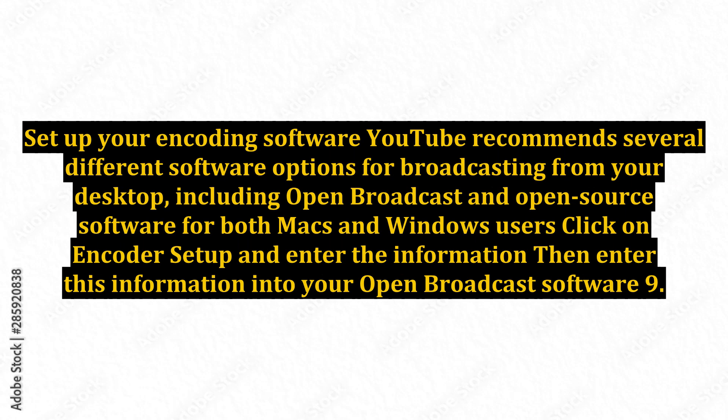Step 8: Set up your encoding software. YouTube recommends several different software options for broadcasting from your desktop, including Open Broadcast Software, which is open source and available for both Macs and Windows users. Click on encoder setup, enter the information, and then enter this information into your Open Broadcast Software.